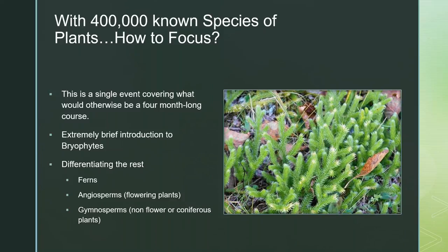There are around 300,000 known species of plants. We're going to speed through the major plant groups, giving some of the major characteristics that will help you differentiate them. That includes a brief introduction to bryophytes — your mosses and liverworts — and then ferns, angiosperms (your flowering plants, what we typically think of when we think of plants), and gymnosperms — your non-flowering or coniferous plants, like pines and spruce.